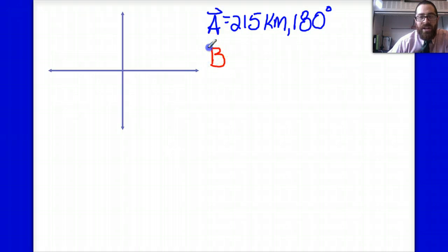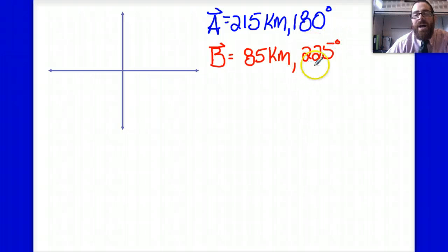Vector B on the other hand is the displacement vector that occurs afterwards and that's the 85 kilometers southwest. So I'm going to call that 85 kilometers and instead of southwest I'm going to use 225 degrees. Notice that I've referenced the positive x-axis for both of these angles here. I don't have to do that but that's how I choose to do it. I think that's a good kind of practice to get into.